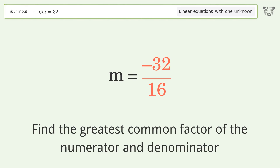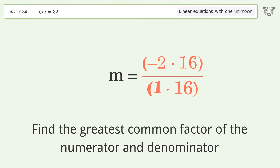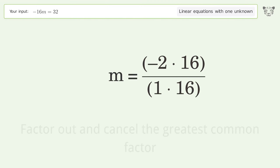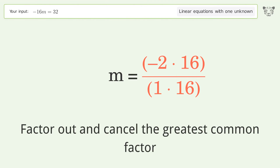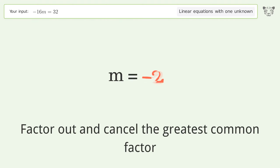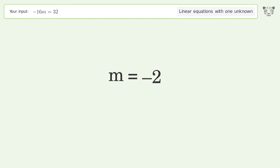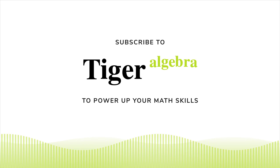Find the greatest common factor of the numerator and denominator. Factor out and cancel the greatest common factor. And so the final result is m equals negative 2.